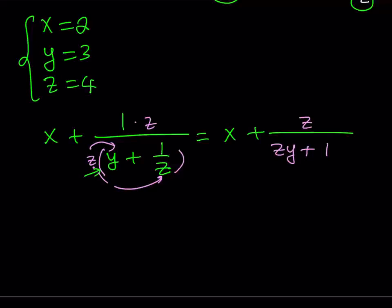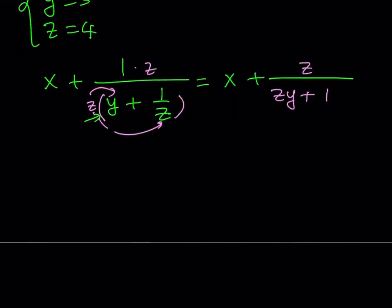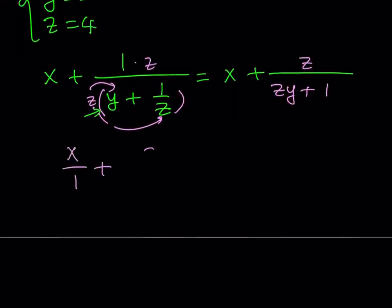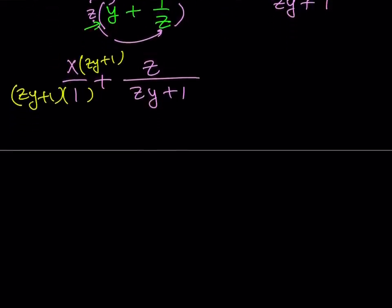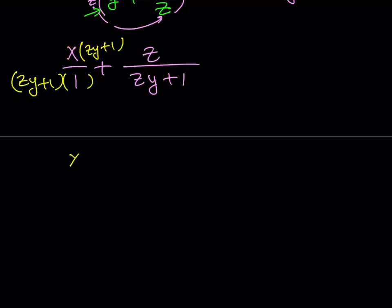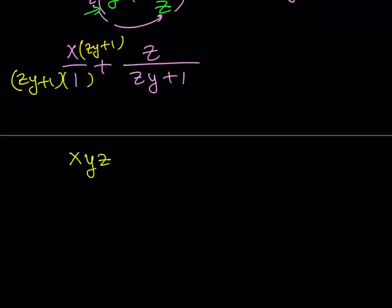And now we're going to make another common denominator. Well, I can just put a 1 underneath the x and put it all together. So I have x over 1 plus z over zy plus 1. And at this point I would like to make a common denominator. So why not multiply both the top and the bottom here by zy plus 1? And what is that going to give me? Let's go ahead and explore. We're going to be getting xyz plus x. Of course we have a common denominator, so I can just add the numerators here. Basic arithmetic. And then the common denominator is just going to be zy plus 1.